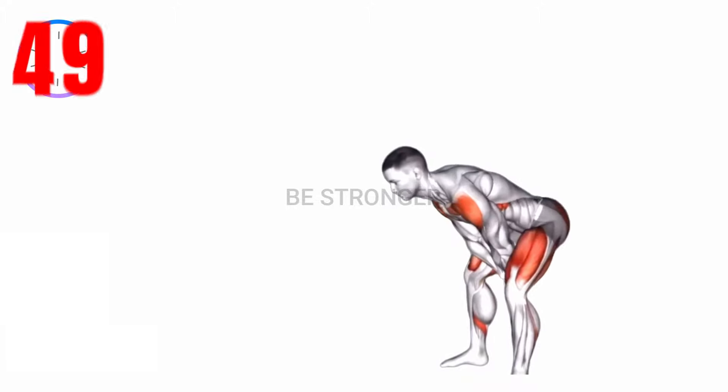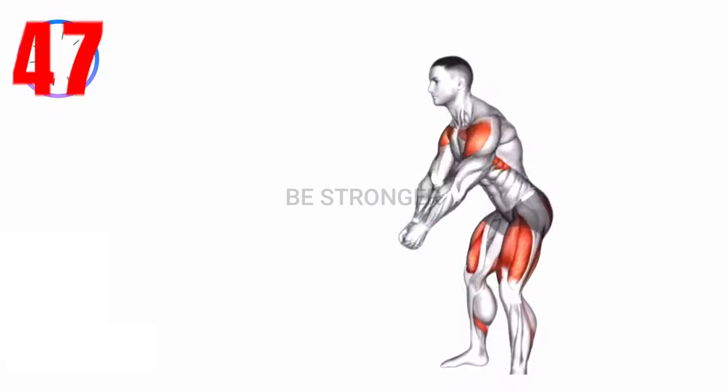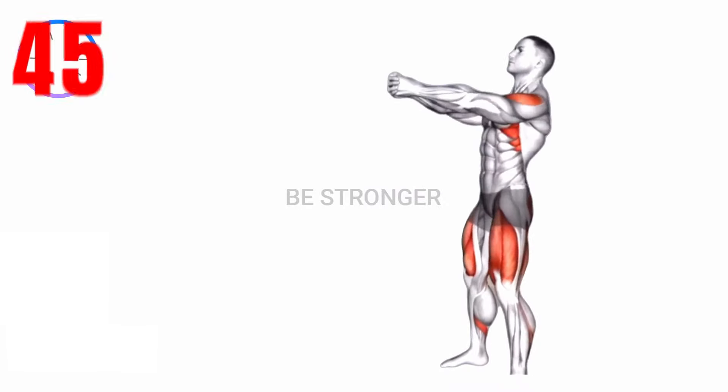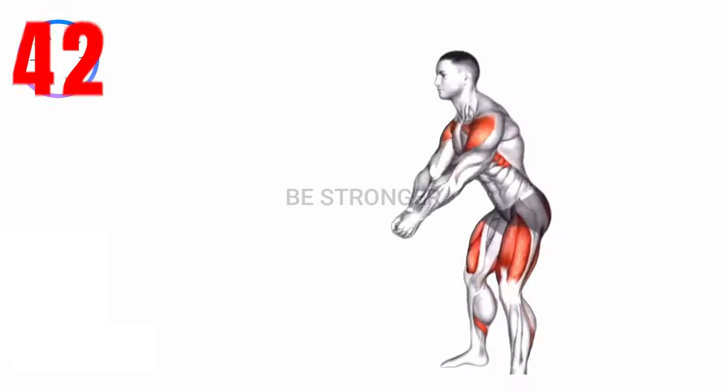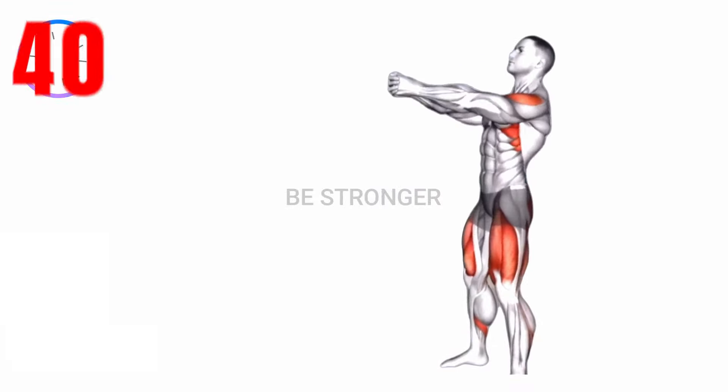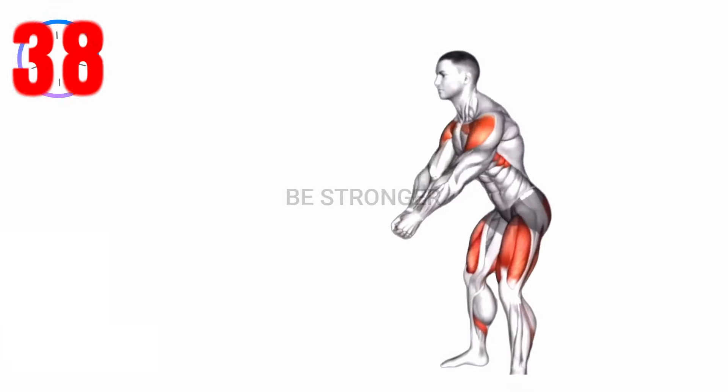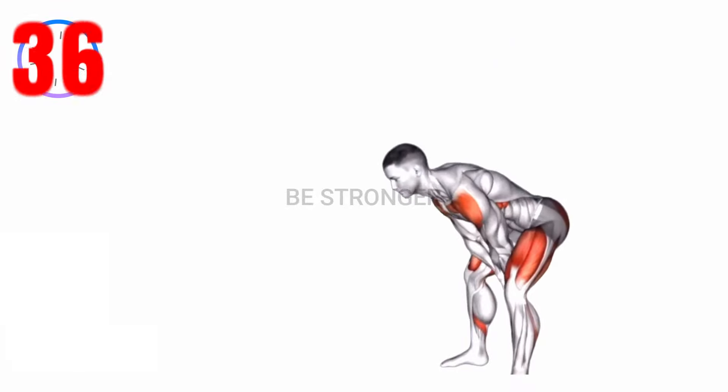Exercise number 7, swing. Stand with your feet shoulder width apart and swing your arms forward while lifting one knee towards your chest. Switch legs and continue swinging. This exercise engages the lower abdominal muscles and promotes overall core activation.